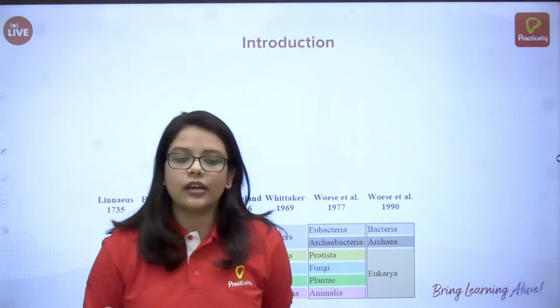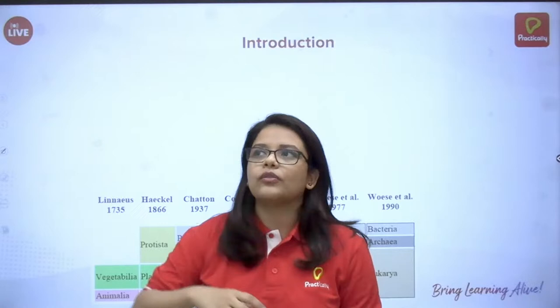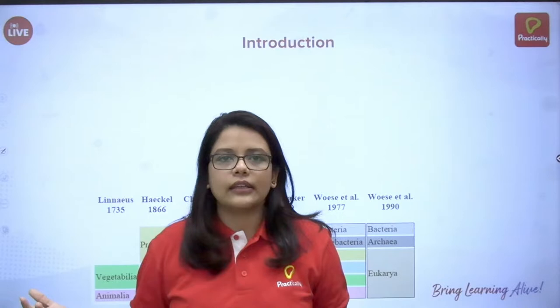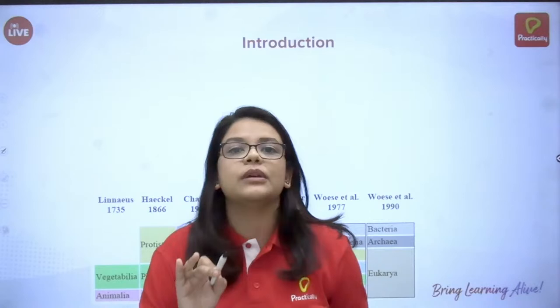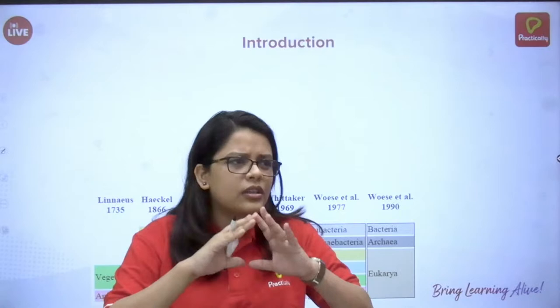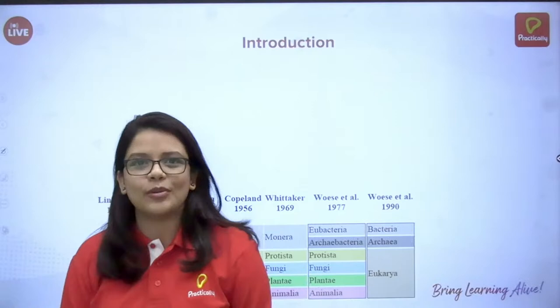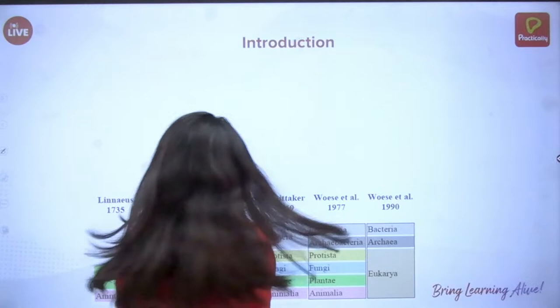Before talking about Monera, Protista, and Fungi, you have to understand classification. There are around 1.7 to 1.8 million species in the world. You cannot put everything into just plants or animals, because they all look different, live differently, have different characteristics, behave differently, and eat different things. That is why we need something called classification.